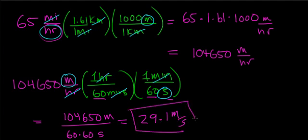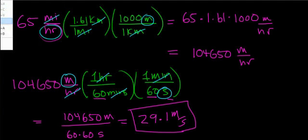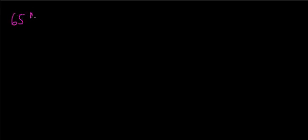I'll circle 29.1 meters per second as my answer. Now I'm going to redo this in a slightly more compact way — doing the length and the time conversion all together in one step. Let me clear up a little room, and then starting again with 65 miles per hour, I'll show how to combine both conversions at once.